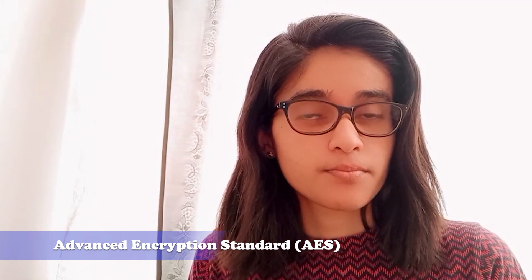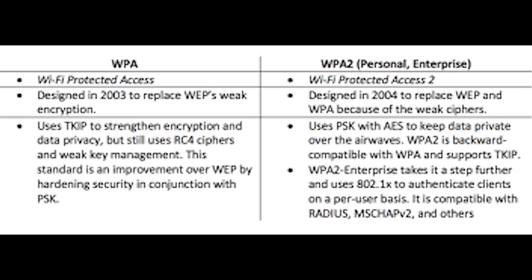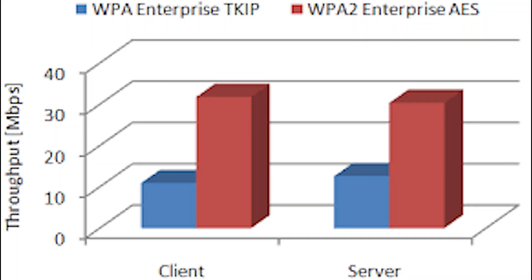Wi-Fi Protected Access Version 2 is a security standard to secure computers connected to a Wi-Fi network, introduced in 2004. The most important improvement in WPA2 over WPA is the usage of Advanced Encryption Standard, AES, which is approved by the U.S. government for encrypting top secret information. WPA and WPA2 are concurrent security standards; WPA2 achieves full IEEE 802.11i compliance, but will not work with older network cards.